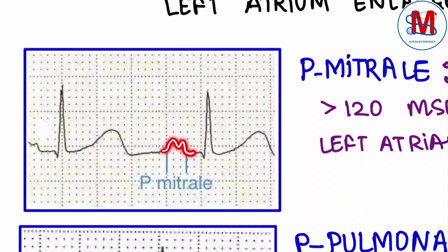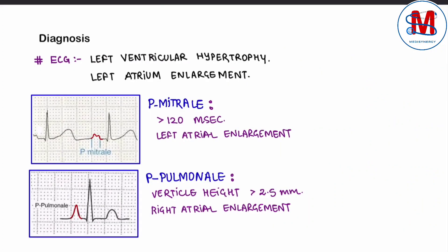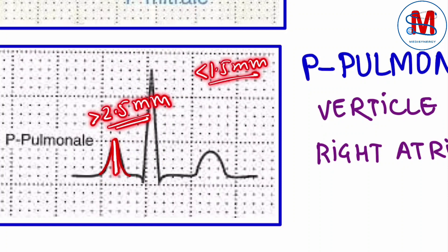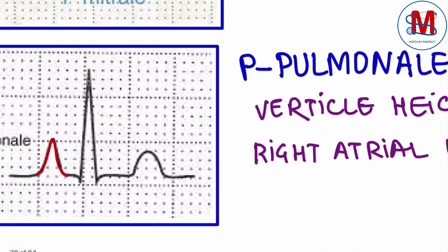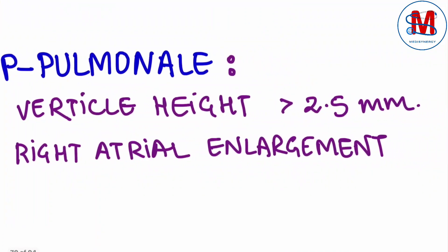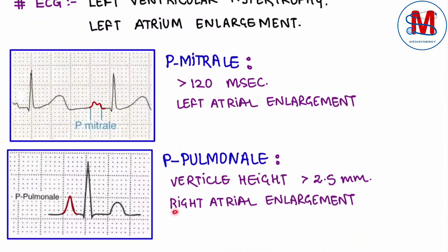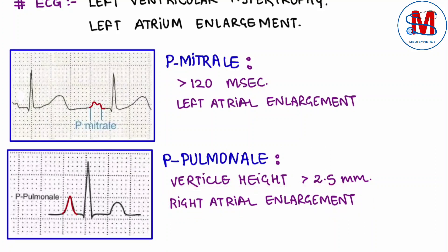In mitral regurgitation, P pulmonale — where the P-wave height is more than 2.5 mm (normally 1.5 mm) — indicates right atrial enlargement.